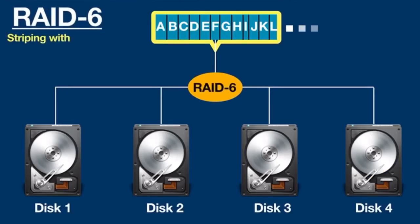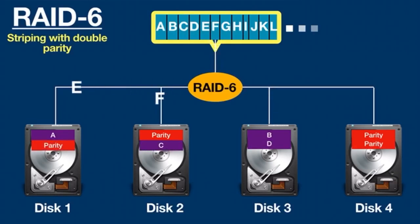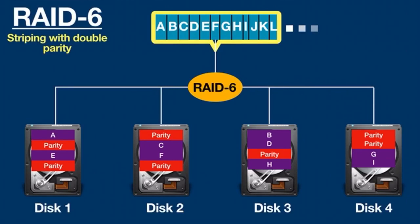RAID 6 is similar to RAID 5 but requires at least four drives and can support two simultaneous hard drive failures. RAID 6 offers a double parity scheme distributed across all the drives in the array, which enables the array to continue working without losing data if two drives fail at the same time.